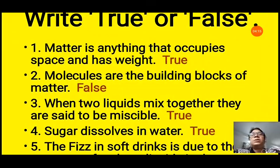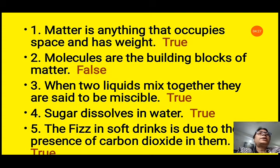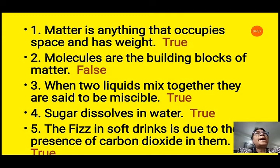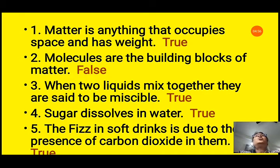Question C: true or false. First: matter is anything that occupies space and has weight — true, because all matter has weight and occupies space. Second: molecules are the building blocks of matter — false, the building blocks of matter are atoms. Third: when two liquids mix together they are said to be miscible — true, because if they do not form separate layers they are miscible liquids; those that do not mix are called immiscible liquids.